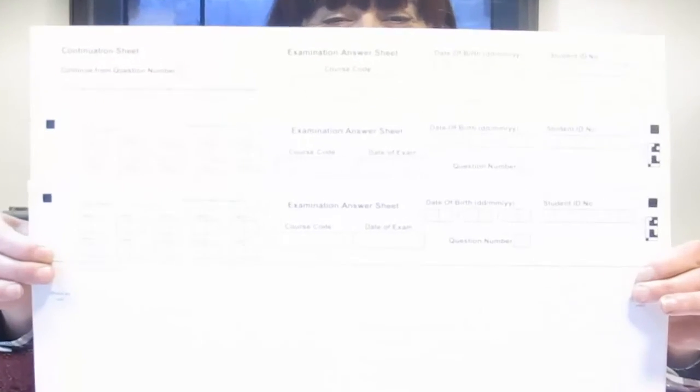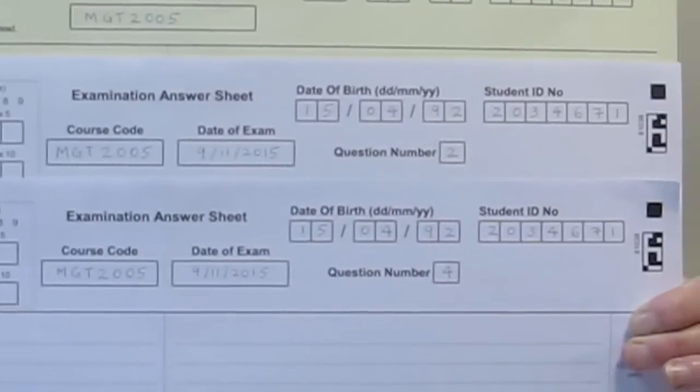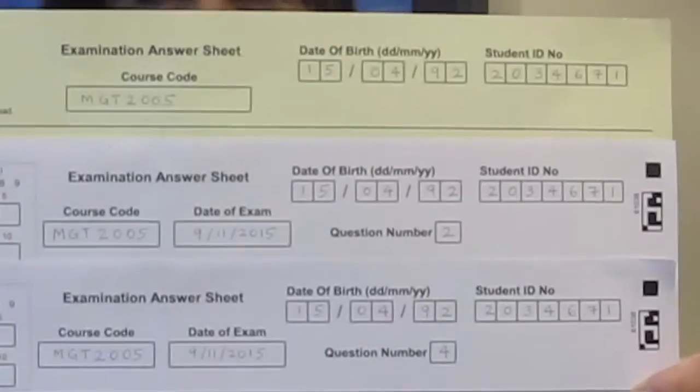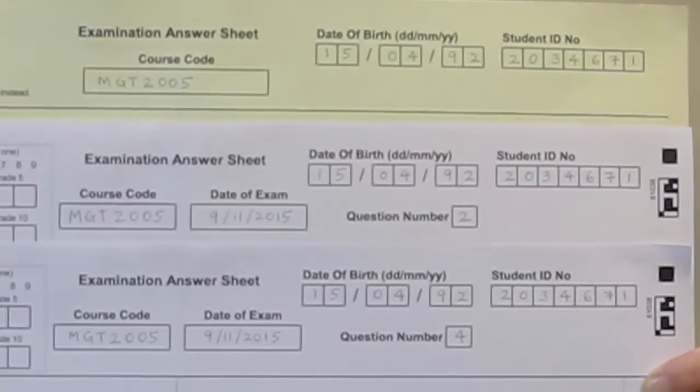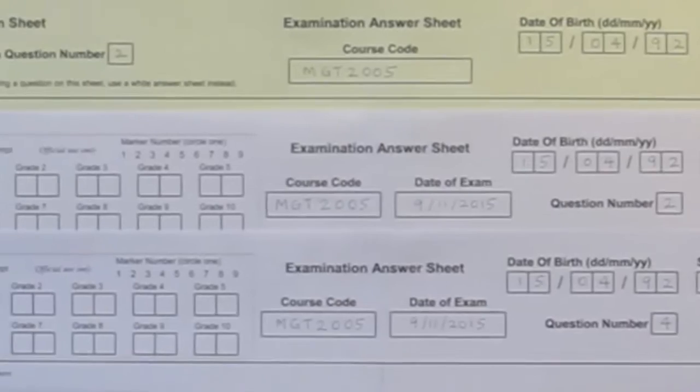After the exam, remind students to check that they have written their course code, student ID and date of birth on each answer sheet including the yellow continuation sheets. Students should write the question number on each sheet. They should make sure that yellow continuation sheets follow the relevant white sheet.